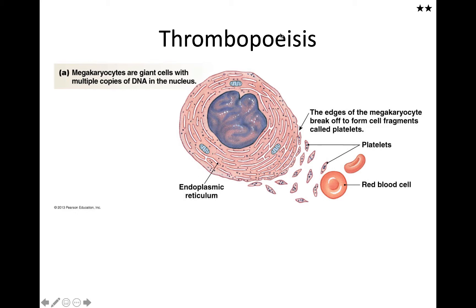Thrombopoiesis, as the name suggests, is the production of platelets. We're not producing platelets just from the stem cells — the stem cells have to develop, grow, and differentiate until eventually they are megakaryocytes. These are humongous cells. For reference, here's a 7 micrometer size cell, and these are quite large by comparison, with a large multi-lobed nucleus.